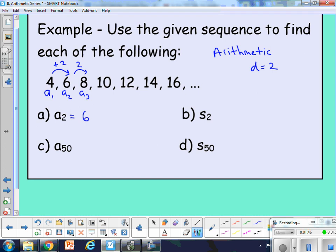Now question B here, s sub 2, so that's going to mean the sum of the first two terms. We shouldn't really need any formula for that. It's literally just adding up the first two terms together. So a1 plus a2 is 4 plus 6, which equals 10. So that's just the sum of the first two terms.